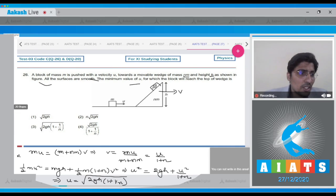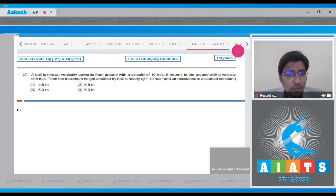And hence, for this question, the correct answer turns out to be option number 3. Now, moving on to question number 27. Question 27 says, a ball is thrown vertically upwards from ground with a velocity of 10 m per second. It returns to the ground with a velocity of 9 m per second. Then the maximum height attained by the ball is nearly. The air resistance is assumed to be constant and g is 10 m per second square.